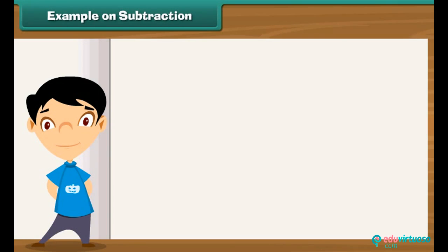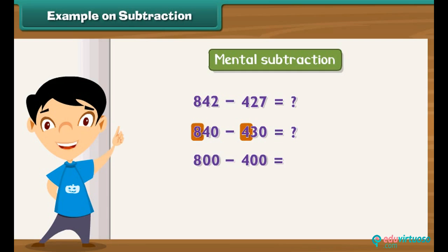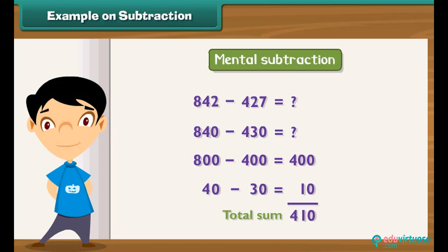Let us practice mental subtraction: subtract 427 from 842. We convert 427 to 430 and 842 to 840. To subtract 430 from 840, first subtract 400 from 800 to get 400, then subtract 30 from 40 to get 10. The difference between 840 and 430 is 410. We subtracted an extra 3 by using 430 instead of 427, so we add 3. We also left out 2 by using 840 instead of 842, so we add 2 more. Thus the result of subtracting 427 from 842 is 415.